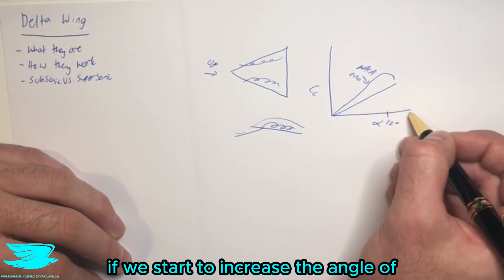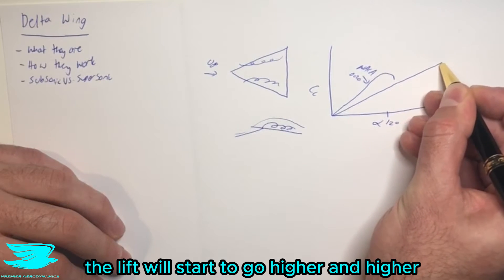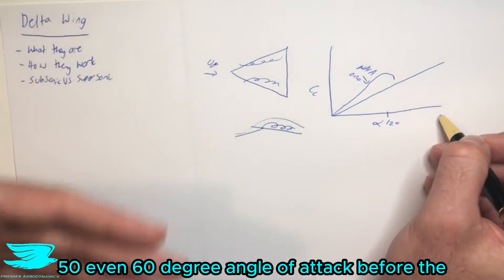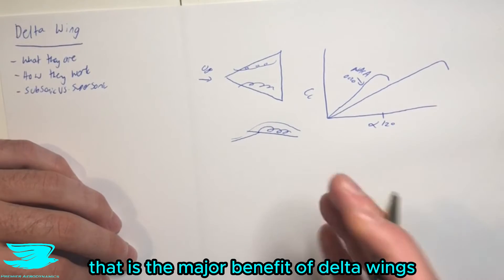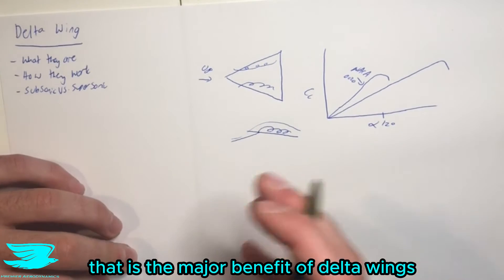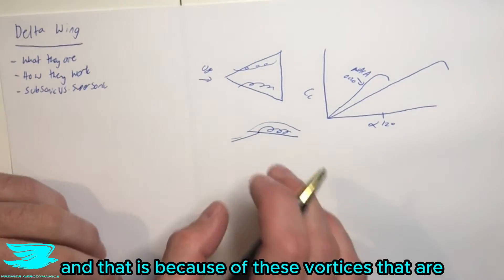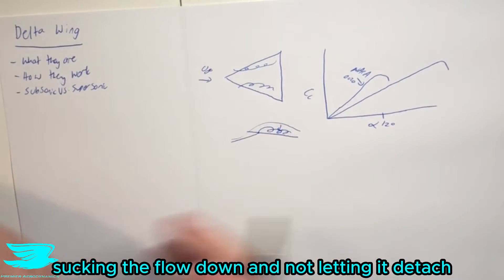And in fact, if we start to increase the angle of attack even more, the lift will start to go higher and higher until we get to like 40, 50, even 60 degree angle of attack before the flow starts to separate and then we get a drop in lift. That is the major benefit of delta wings. They can go to much higher angle of attack and still produce a lot of lift. And that is because of these vortices that are these low pressure cores, sucking the flow down and not letting it detach.